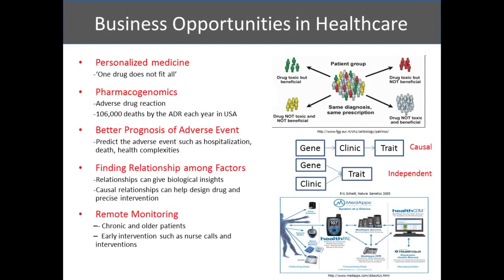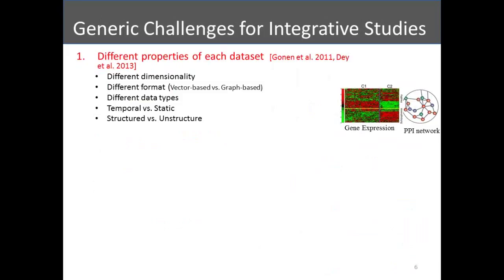Given all these opportunities, they also come with a lot of challenges. I will focus mainly on the data mining and data science challenges posed by diverse clinical and genomic data. The first challenge is how to handle different properties of data. Whenever we have diverse types of data, each dataset has different properties — different dimensionality, different formats. For example, gene expression is a vector-based format where each row is a patient and columns are genes, while protein-protein interaction network is a graph where relationships between features are given as a network.